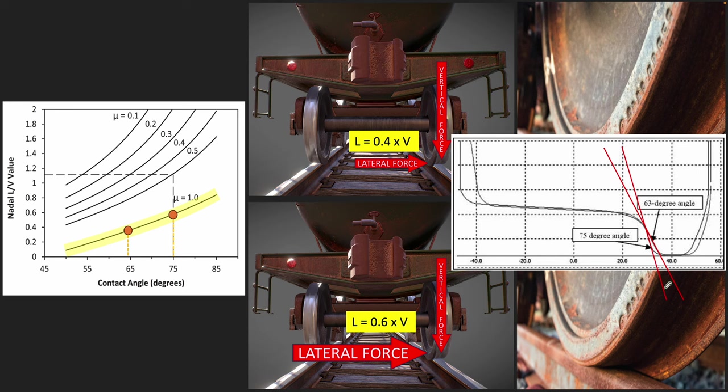What we can see is that for the 63 degree flange angle, your lateral force can only be 40% of the vertical force and you'll be fine. But for a more steeper flange angle, which is 75 degrees, your lateral force can be now 60% of the vertical force instead of 40. So what that means is that if you keep increasing the flange angle, you will be able to not derail at even higher and higher percentages of vertical force.